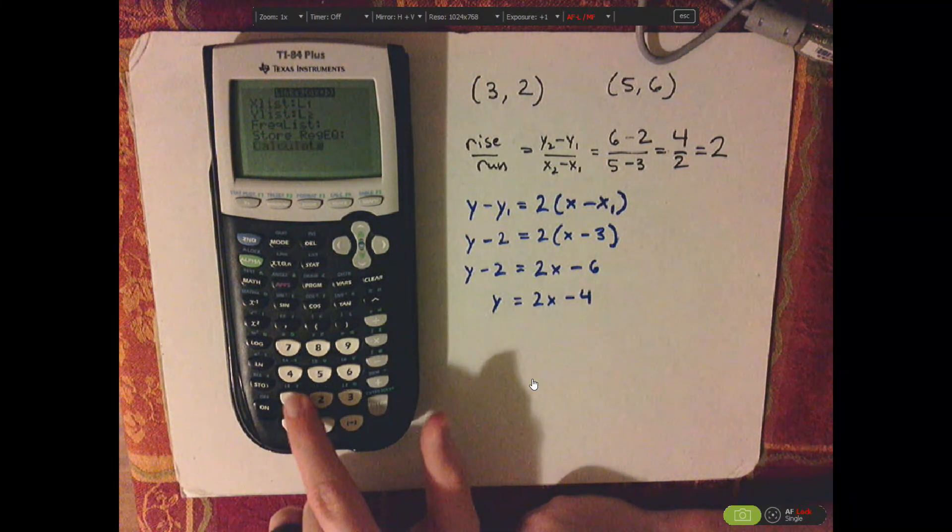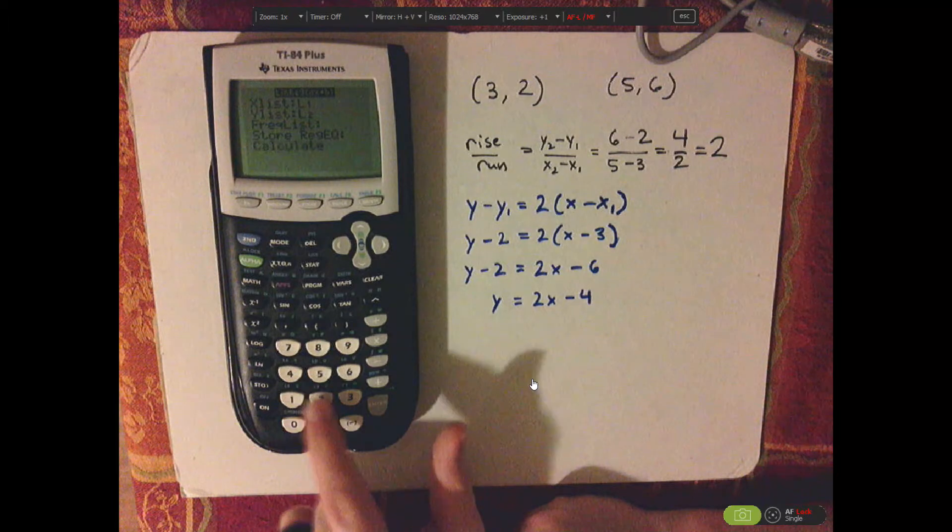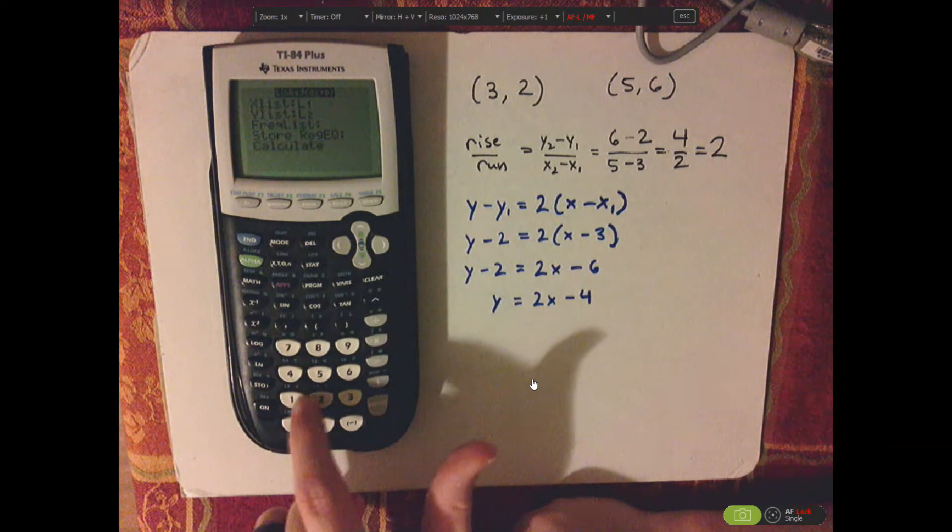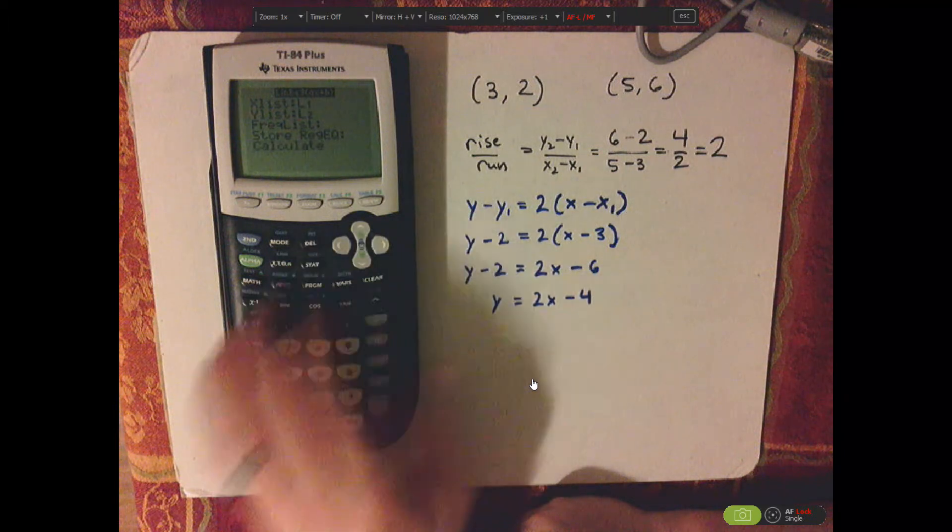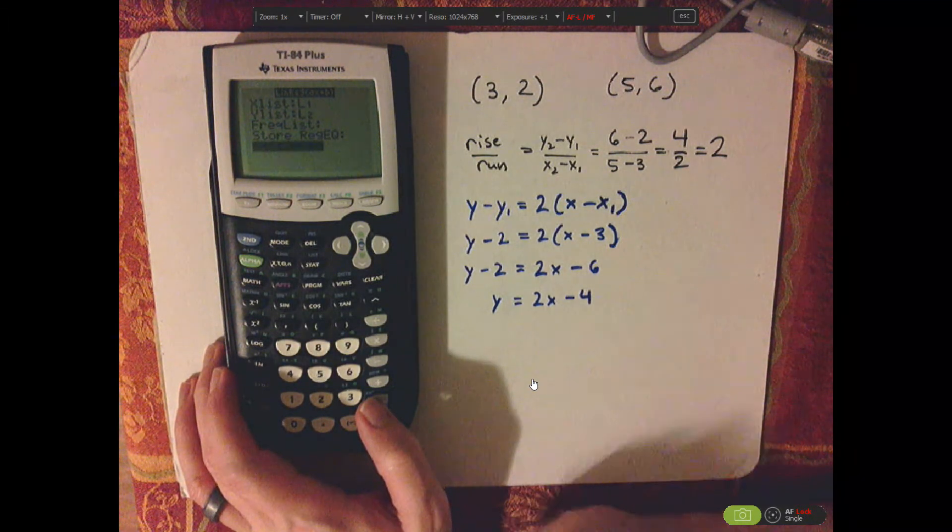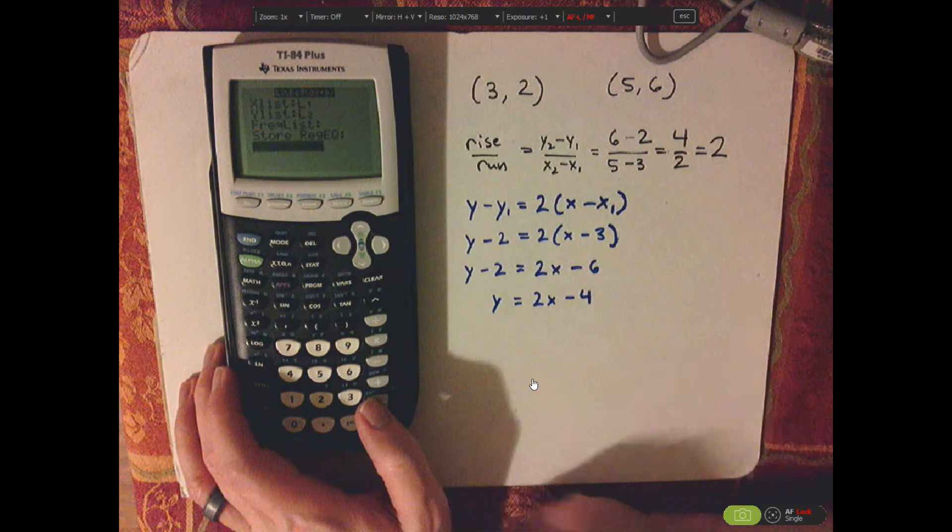Those list buttons, by the way, are down here, L1, L2. And see how they're blue? You would push second to get those. And then calculate. You might not need to push second, because it might do it by default.